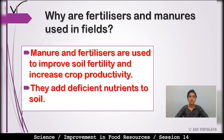Simple si baat hai — manures and fertilizers ka use karte hain taaki soil fertility improve ho aur crop productivity bhi increase ho. They add deficit nutrients to the soil — soil ko required nutrients provide karte hain.